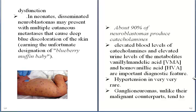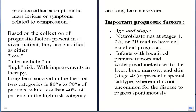Although there is elevation of catecholamines, hypertension is very rare. Ganglioneuromas, unlike their neuroblastoma counterparts, produce either asymptomatic mass lesions or symptoms related to compression.